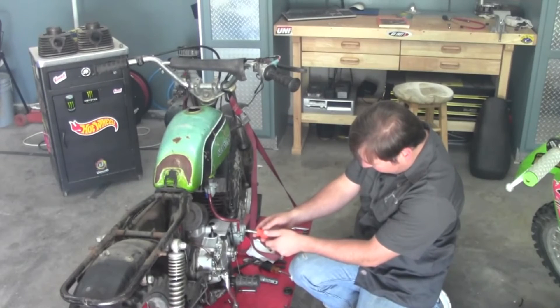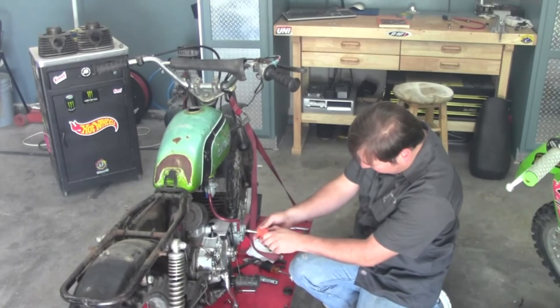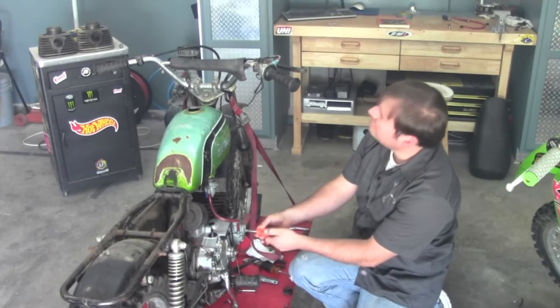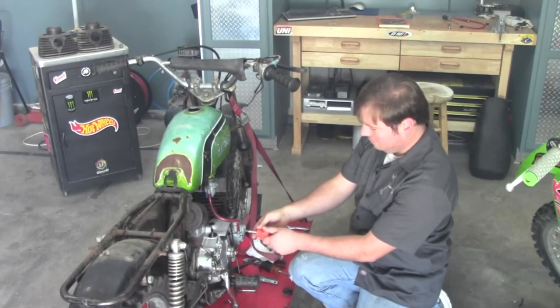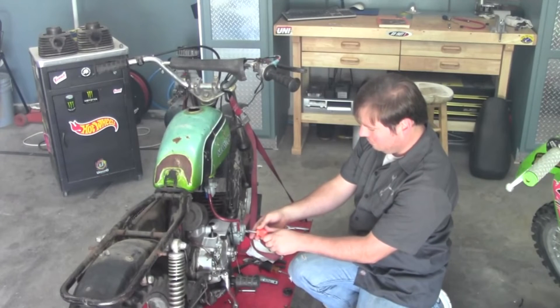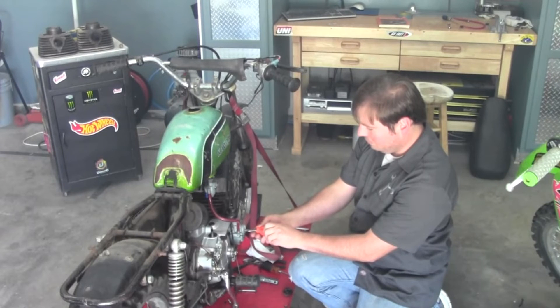Now that we have gone over all the basics of all the different throttle openings, and you've got to remember this is progressive as it opens and closes. Now we can go over some of the symptoms associated with jetting problems and how to correct them.